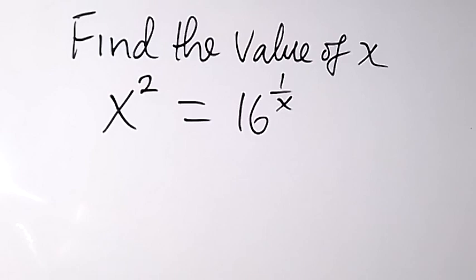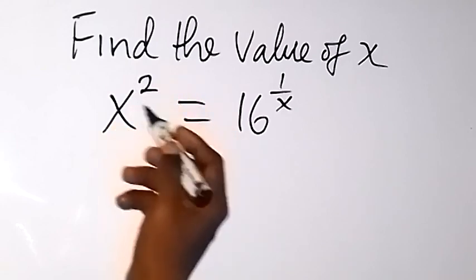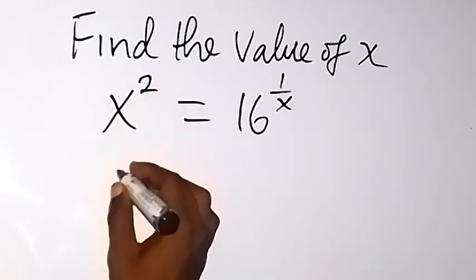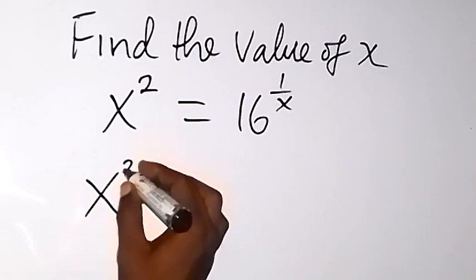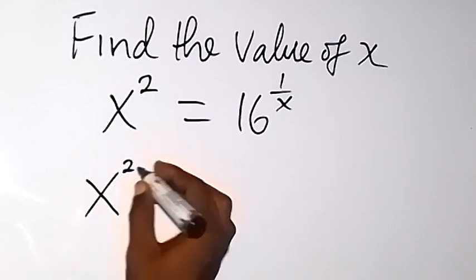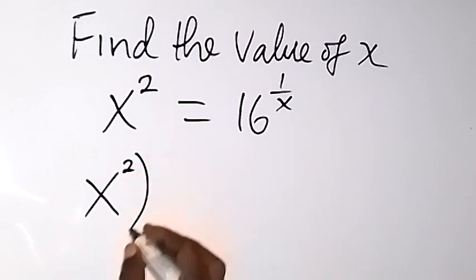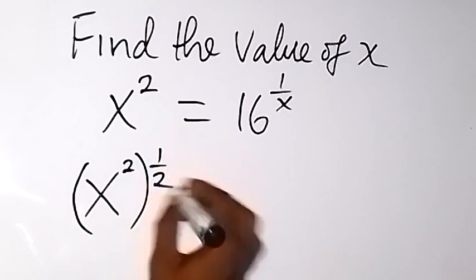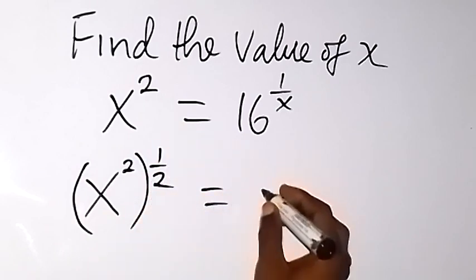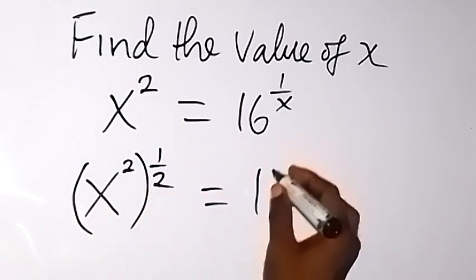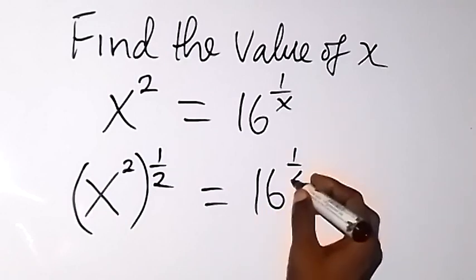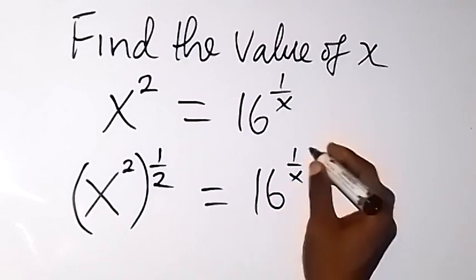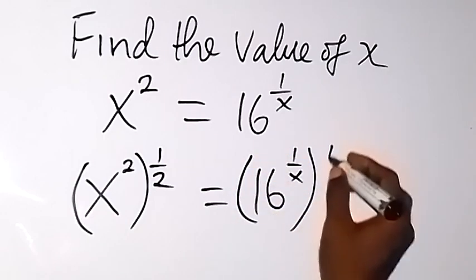From here, we can remove the power of 2 on this x by multiplying both powers with 1 over 2. So we can say x raised to power 2 multiplied by the power of half, then equals to this side: 16 raised to power 1 over x, multiplied by the power of half.